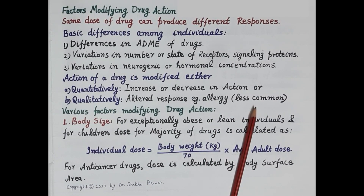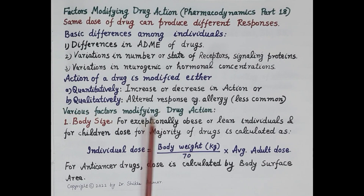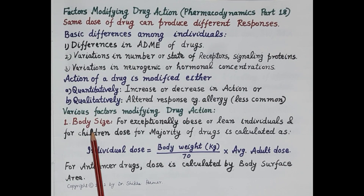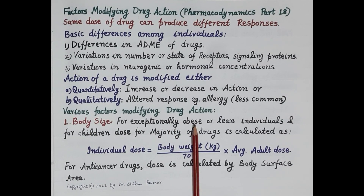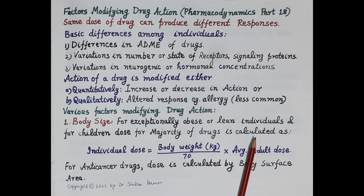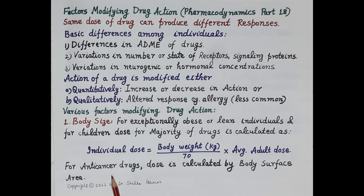The first factor is body size. The average adult dose is a standard dose referring to an individual of medium build. For exceptionally obese or lean individuals and for children, the dose for majority of drugs is calculated based on body weight: individual dose = (body weight in kg / 70) × average adult dose. For anti-cancer drugs and a few others, dose is calculated by body surface area instead.